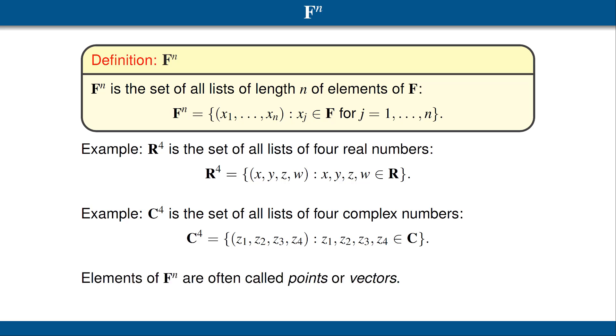Elements of F^n are often called points or vectors. This geometric language may help lead you to think about analogies to the geometry of R² or R³, but you do not need to worry about whether or not R⁴⁰⁰ has a physical realization. An element of R⁴⁰⁰ is simply an ordered list of real numbers of length 400.